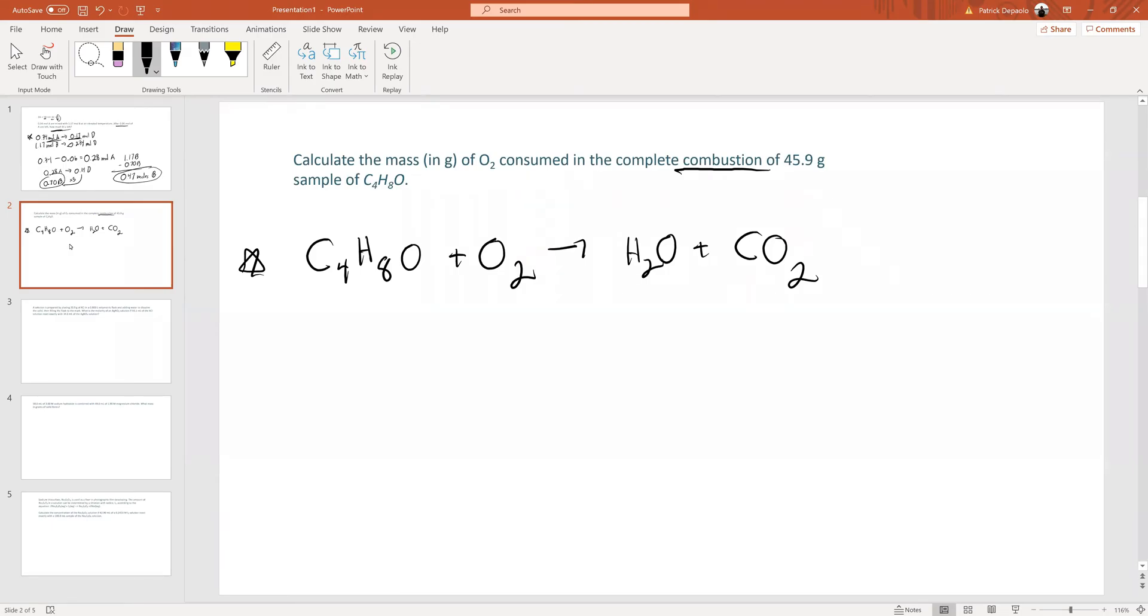Now we need to balance it. We have C4, we could put a 4 over here. Then we have H8, so we can put a 4 in front of here. Now we need to balance the oxygen, which is the most difficult part for combustion. On the right side, we can see we have 4 oxygens plus another 8 oxygens, that's 12. On the right, we have 1 over here and 2 over here. The way I like to think about this is because you have oxygen from two different sources on the left-hand side.